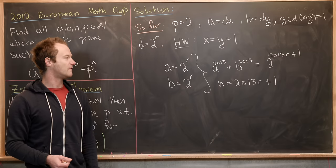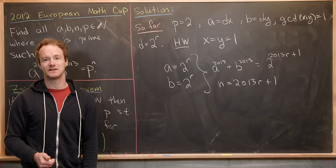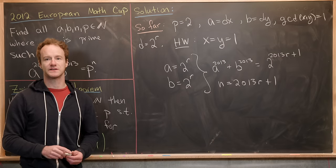But that tells us that our n is equal to 2013 times r plus one. So we've got a whole family of solutions that is indexed by this number r. And that's a good place to stop.